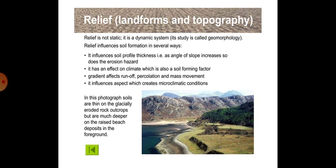Relief, landforms and topography. Relief is not static — it is a dynamic system. Its study is called geomorphology. Relief influences soil formation in several ways: it influences soil profile thickness, and as angle of slope increases, so does the erosion hazard. It has an effect on climate, which is also a soil forming factor. Gradient affects the zone of percolation and mass movement, and it influences aspect which creates microclimatic conditions. In this photograph, soils are thin on the glacially eroded rock outcrops but are much deeper on the raised beach deposits in the foreground.